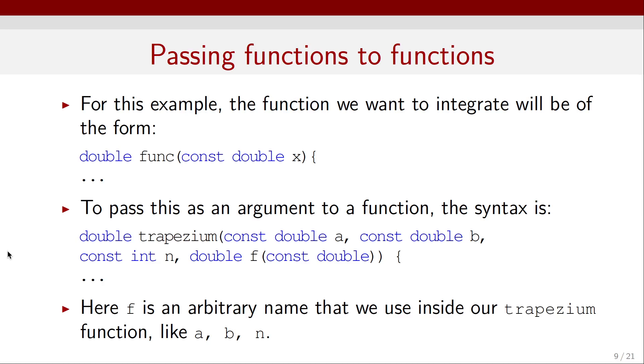So for this example, the function we want to integrate will be of this form: double function with argument const double x. To pass this as an argument to a function, the syntax would be double trapezium, then all of the parameters - double a, double b, integer n - and then the function double f with the type of argument const double. We do not have to specify the name of the argument here.